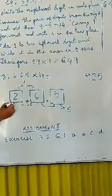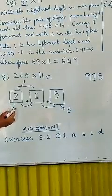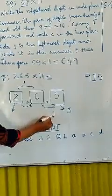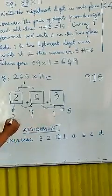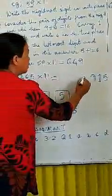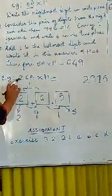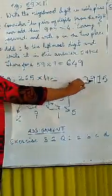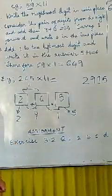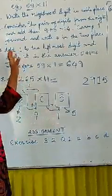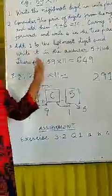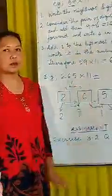And next, the only number left is here, 2. So, you write that leftmost number, 2. So, the answer is, 265 into 11 is 2915. So, we can find the answer very easily following these simple steps.